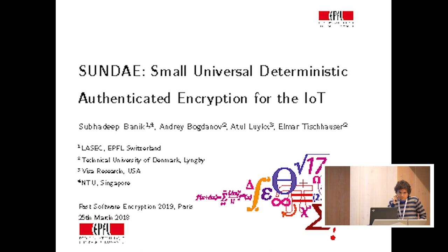This is the case with, for example, SIV, that requires two independent keys, as in the case of COPA or ELMD, that requires internal state size of at least thrice the block size of the underlying block cipher. Or the case of EAX, which requires multiple calls to the block cipher before any data can be processed.